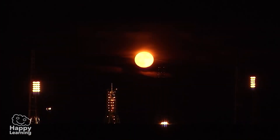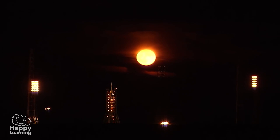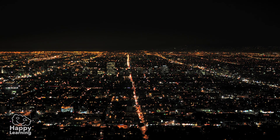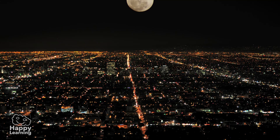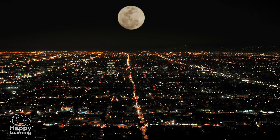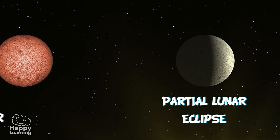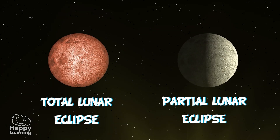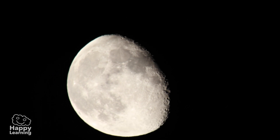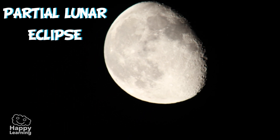Lunar eclipses are quite frequent and can be seen from any part of the world at night time. They last various hours and can be of different types, though the most frequent ones are the partial lunar eclipse and the total lunar eclipse. When there is an eclipse and it looks as if someone has taken a bite out of the Moon, it is a partial lunar eclipse.